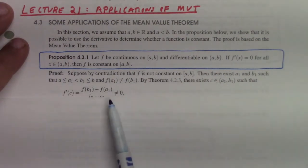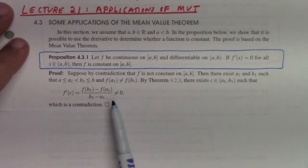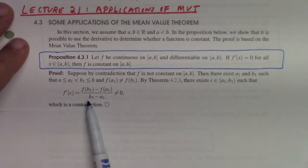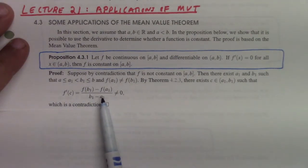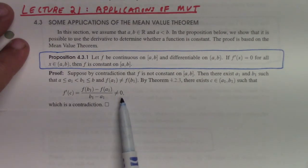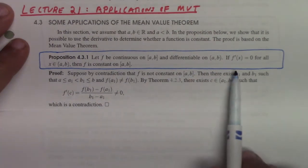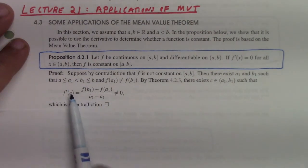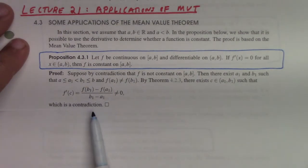By the mean value theorem, there exists a constant c such that the average rate of change from a₁ to b₁ equals f′(c) for some c between a₁ and b₁. By construction this is not equal to zero, yet f′(x) = 0 for every x in (a, b), and c is in that interval — so that's a contradiction.